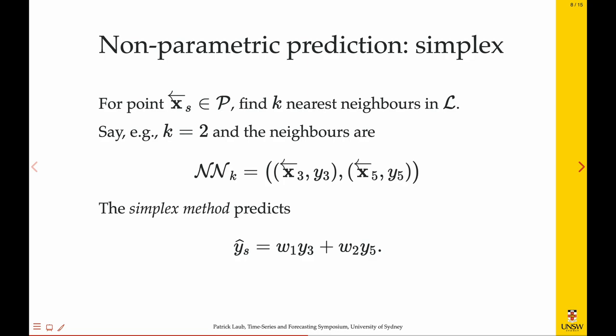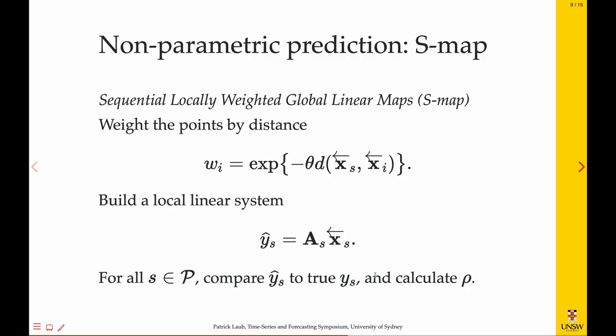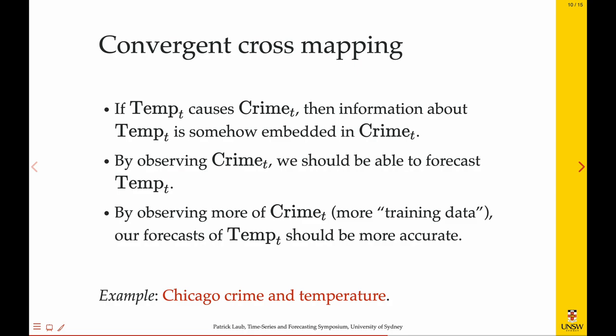A nonparametric way to predict this, where the y associated with this point is, is to find the nearest neighbors in the library set. In this example I've just chosen two nearest neighbors, and I'm pretending that x3 and x5 are the closest ones to the point xs that I pulled out of the prediction set. And then one basic EDM method to predict is the simplex method. You basically see, if these are the neighbors, you see what the values of y for that time step to a 3 and 5, and do a weighted average of them. The slightly more complicated one is the S-map, where they do a linear approximation at each different point, but it's not the same linear approximation. They weight the points that are closer to the point you're trying to predict higher than the ones further away in the library set.